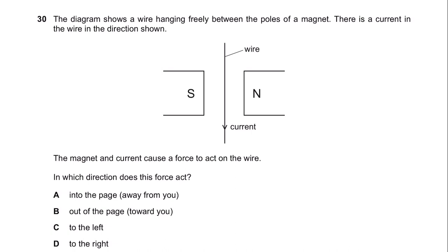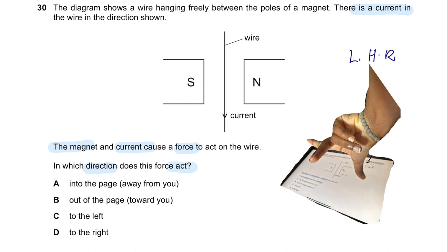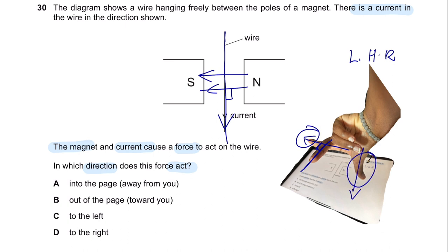Question 30. The diagram shows a wire hanging freely between the poles of a magnet. There is a current in the wire in the direction shown. In which direction does the force act? Using Fleming's left-hand rule: the index finger represents the magnetic field direction from north to south. The middle finger represents the current direction, perpendicular. This shows that the thumb—representing the force—is pointing into the page. So the answer is A.